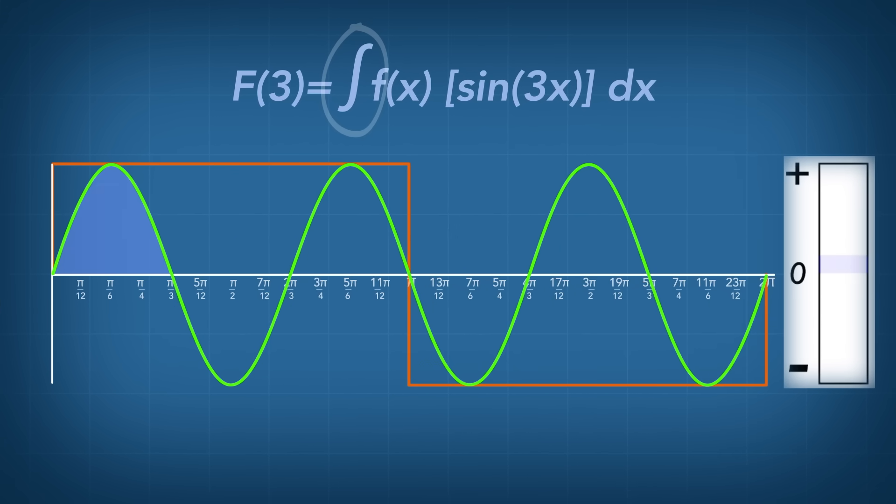If the sum is zero, the waves are not correlated at all, and none of this wave is used to make up the square wave. If the sum is negative, the waves are overall anti-correlated, which is kind of like grooving upside down. So the negative of the sine wave goes into the Fourier series.